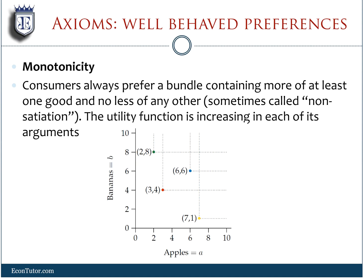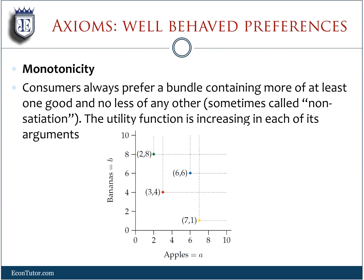When we combine these, what we get is well-behaved preferences. One of these is the monotonicity axiom, which means that people always prefer more to less. Between two bundles, I will always prefer the one that has more. So if I have three apples and four bananas, if you give me more of either one, that's going to be preferred. Three apples and five bananas has to be better than three apples and four bananas. So as I go up or to the right, utility is higher — this direction is strictly better.